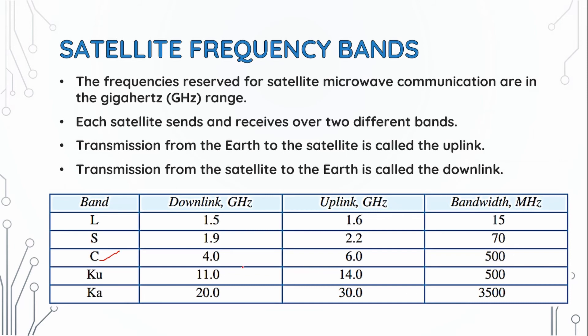C band: downlink is 4.0 GHz, uplink is 6.0 GHz, and bandwidth is 500 MHz. KU means Kurt under, which is a German word meaning short under. The downlink is 11.0 GHz, uplink is 14.0 GHz, and bandwidth is 500 MHz.